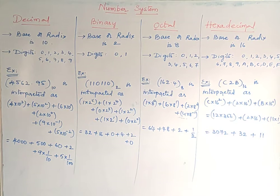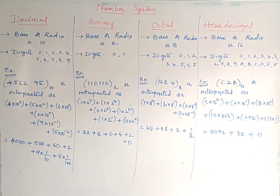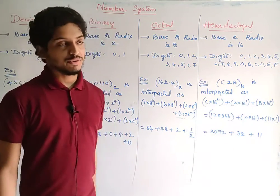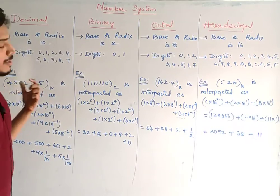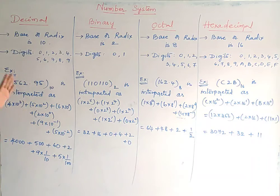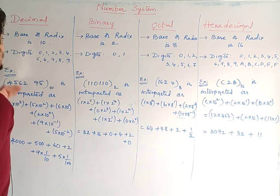Now let us see what exactly a number system is. We already studied number systems in DLD, so this is just a sort of revision. There are four types of number systems. The very important and significant ones are the decimal number system, binary number system, octal number system, and hexadecimal number system.